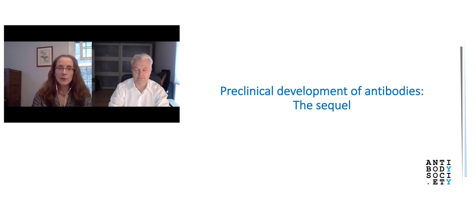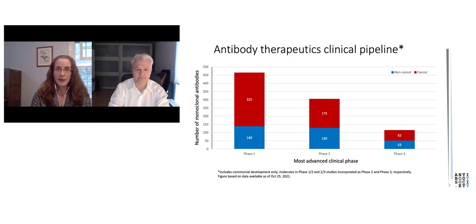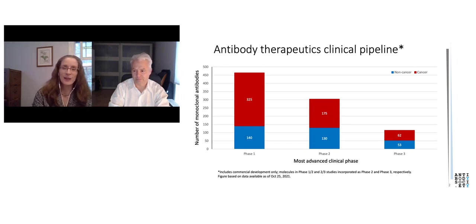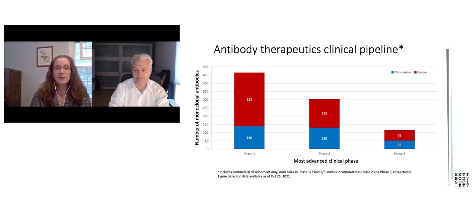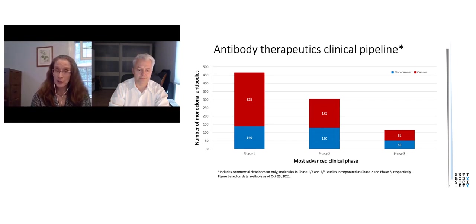So let's start with the sequel to the main event. If you generate a successful preclinical package, you will join a large number of antibodies that are already in the clinical pipeline. First, you'll have the evaluation at phase one. As you can see from this graph, you'll have lots of company, as some 465 unique antibody therapeutics are being evaluated at that stage. If all goes well, the molecule will enter phase two, which is also a bit crowded with over 300 molecules at that stage.